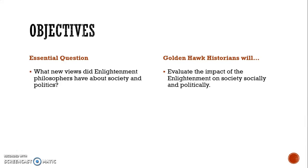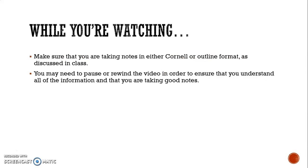Golden Hawk Historians will evaluate the impact of the Enlightenment on society, socially and politically. While you're watching, make sure that you're taking good notes in either Cornell or Outline format, as we've talked about in class. It's okay if you need to pause or rewind the video in order to ensure that you understand all the information and that you're taking good notes.